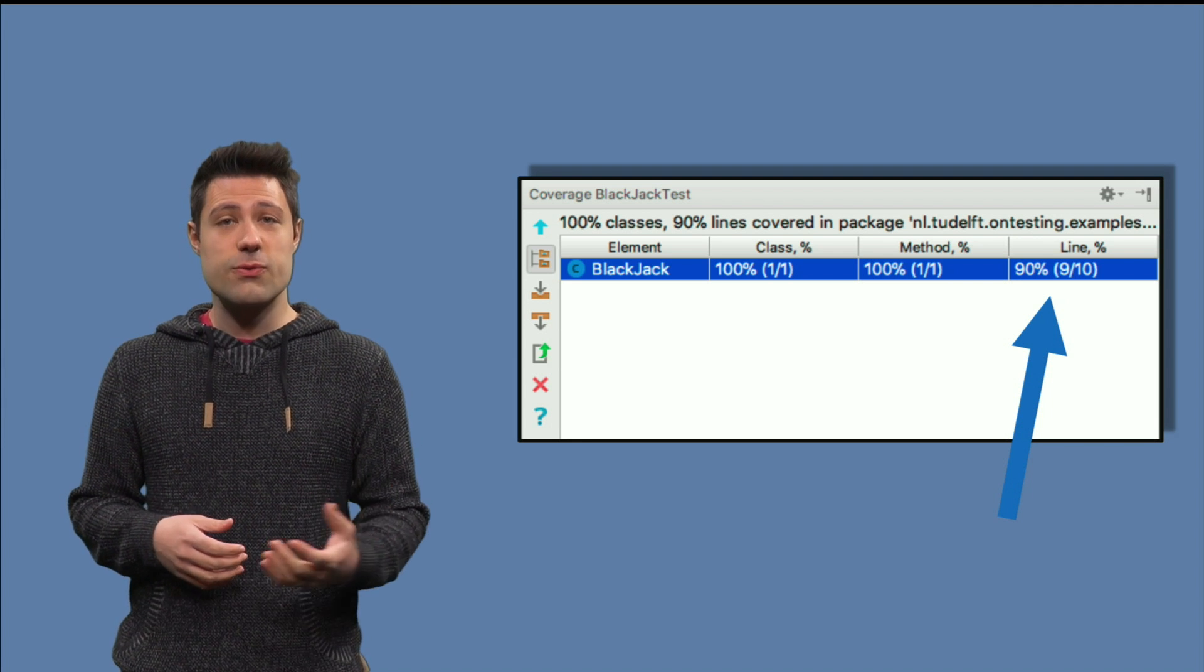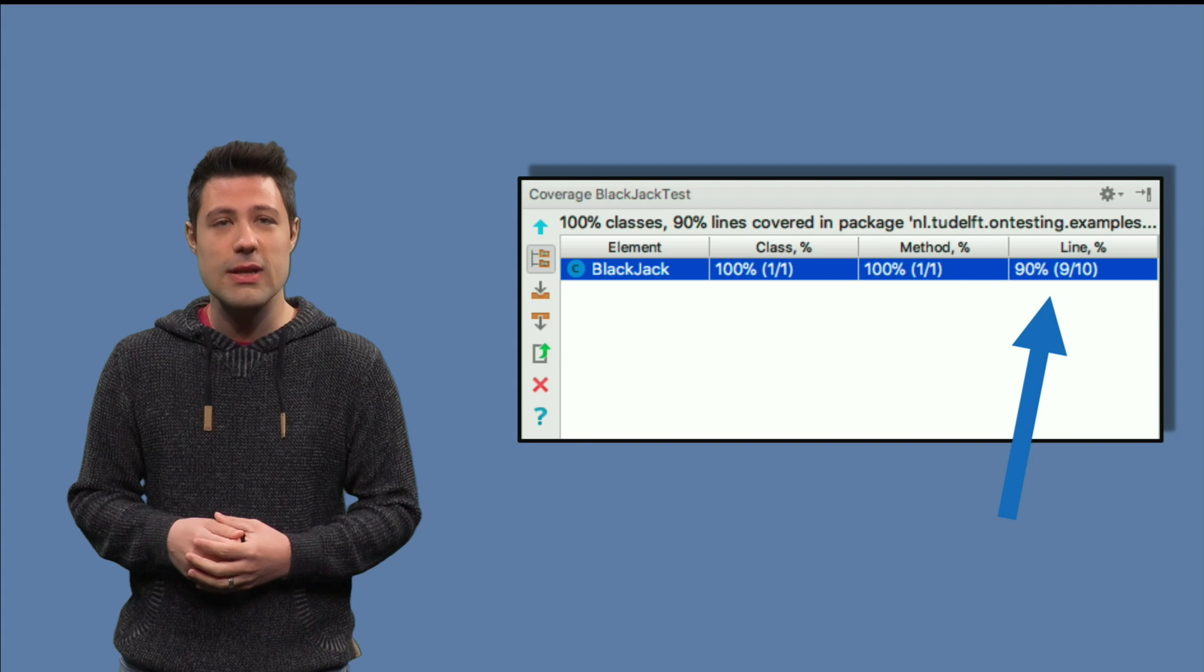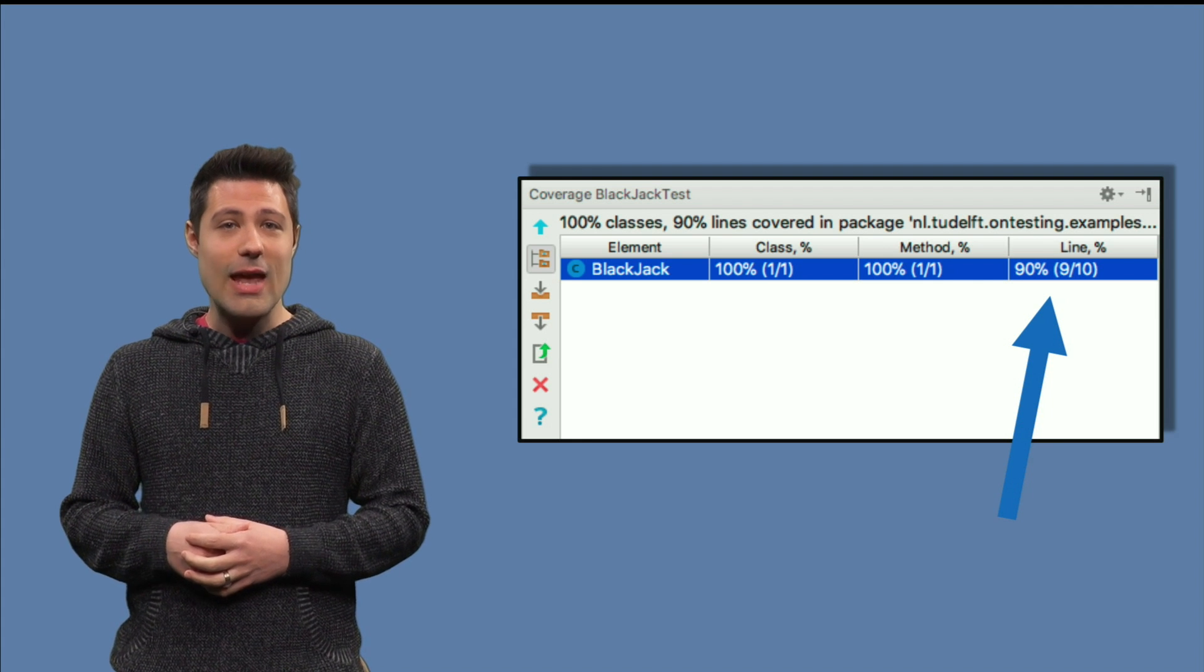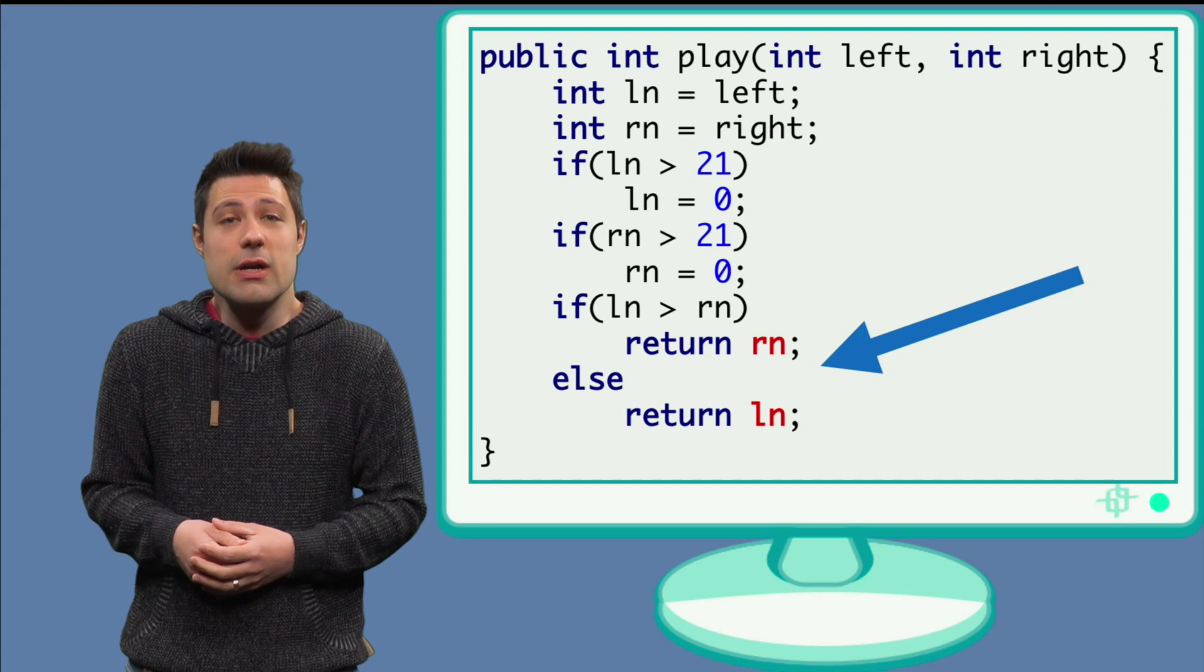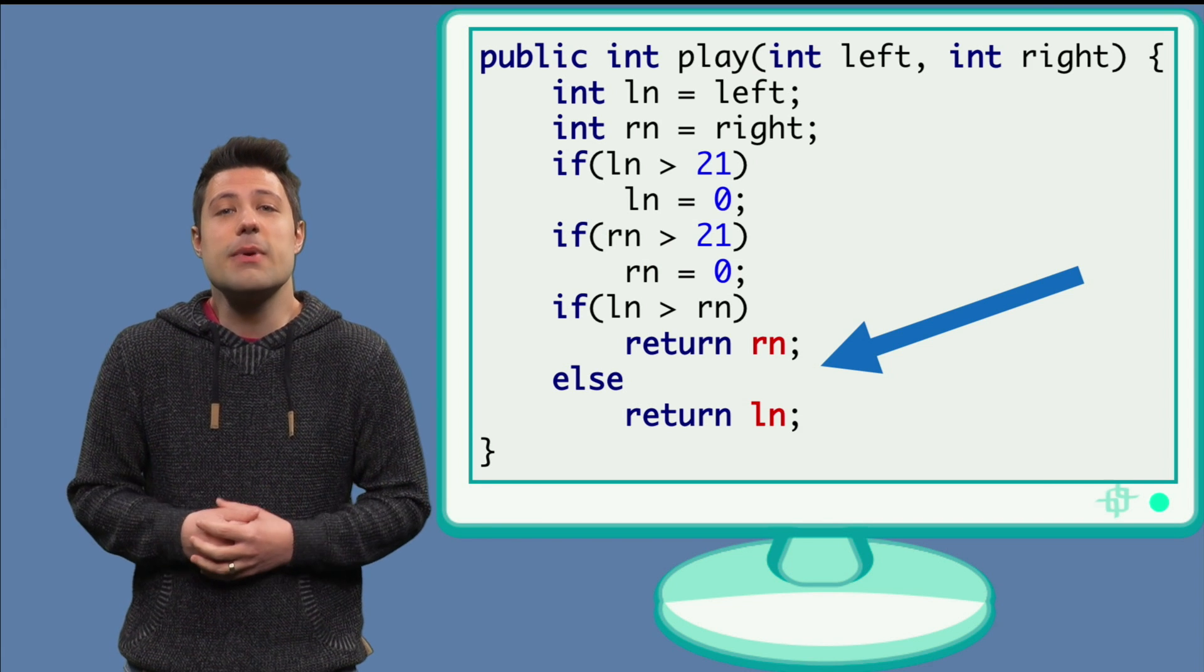With our first test, for example, we were able to cover 90% of all the lines in the class. And we saw that actually trying to cover all the lines makes sense. We were able to even find a bug while doing it.